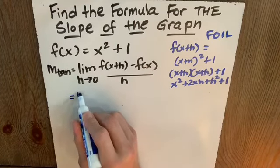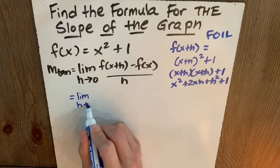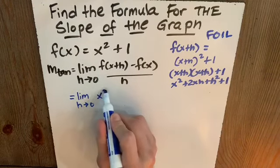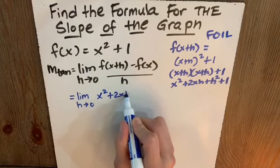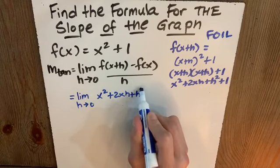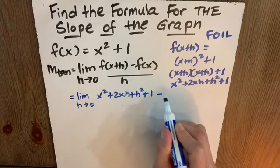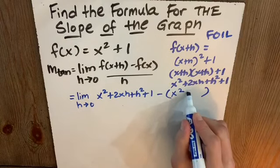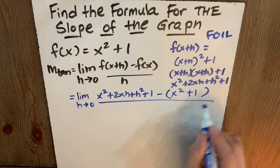Clearly, f of x is simply that. So this is going to give us the limit as h approaches 0 of, what's f of x plus h? I just did it. x squared plus 2xh plus h squared plus 1 minus, well, f of x was given to us as x squared plus 1 all over h.